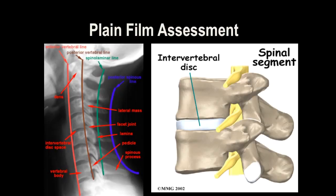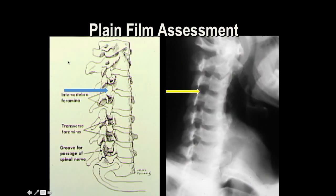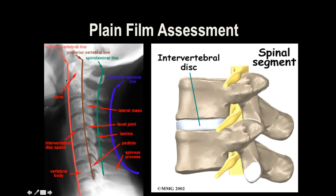These are the four lines for assessing alignment of the cervical spine, which are tremendously important. The first line is drawn along the anterior aspect of all the vertebral bodies to assess for alignment — if any vertebral body is displaced anteriorly or posteriorly, drawing this imaginary line will detect it. We also assess the dens or odontoid and the space in the atlanto-axial joint. The posterior vertebral line follows the posterior aspect of the vertebral bodies.